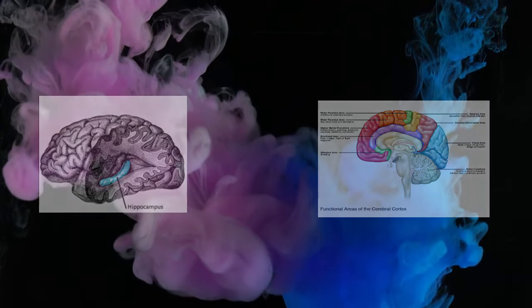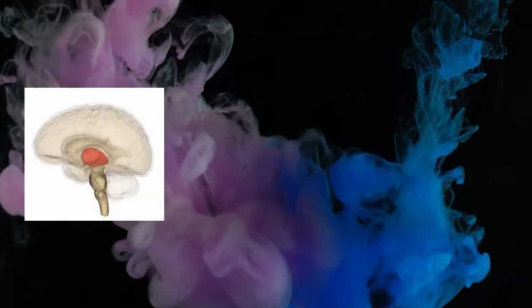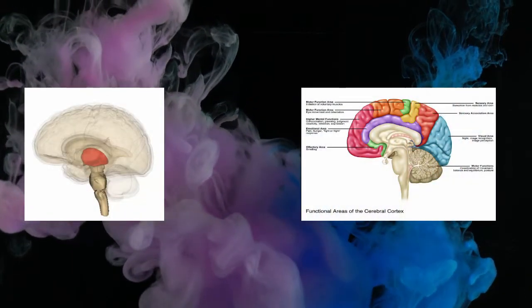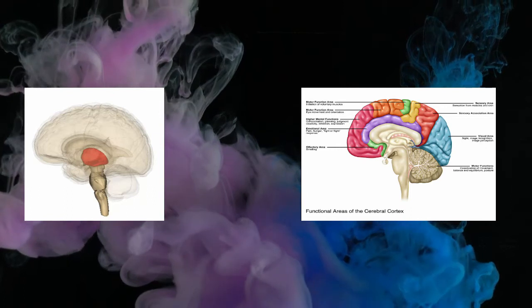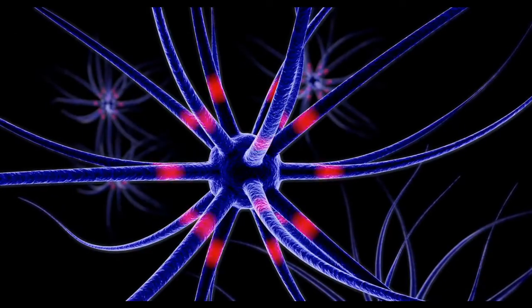This seems to happen through a relationship between the thalamus and the neocortex. This kind of memory is also strongly related to sleep spindles. In fact,